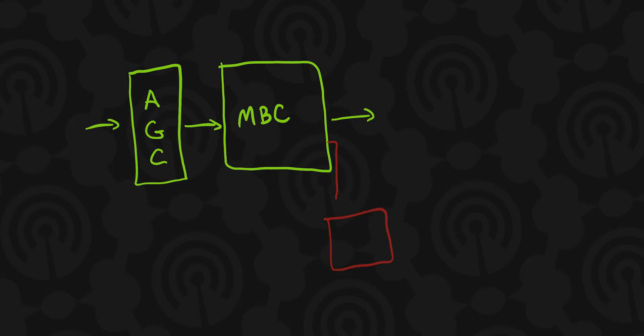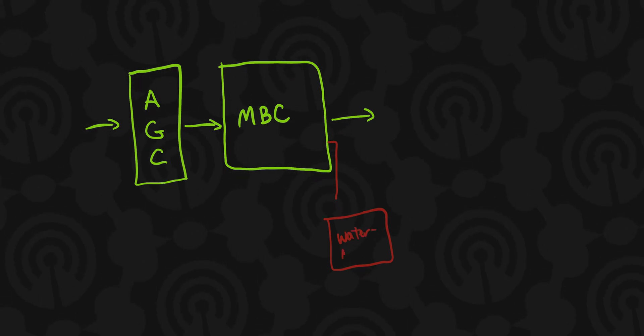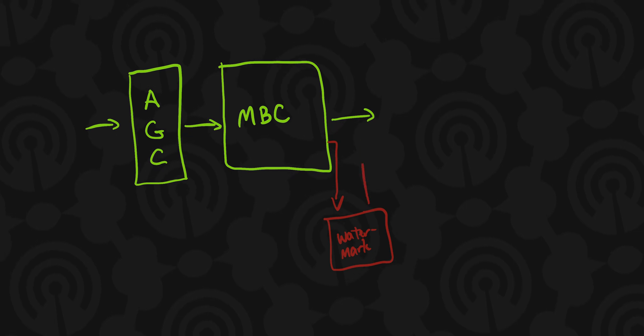Newer audio processors have a watermarking step right after the multiband compression. In the United States, we have Nielsen, formerly Arbitron, and they measure the audience. That's a whole discussion on watermarking and Nielsen, so we'll shelve that for later. But the watermarking at this step is the best place to do it because of the way the watermarking hides in the audio.